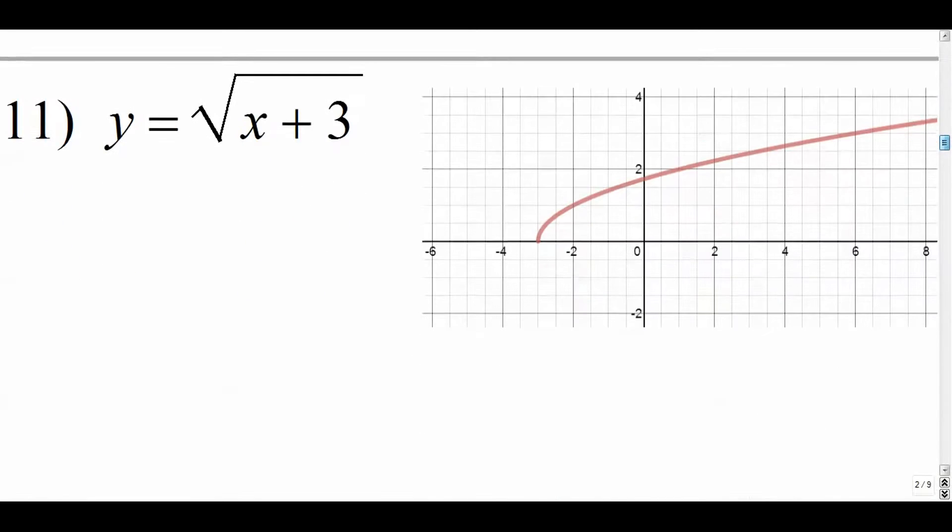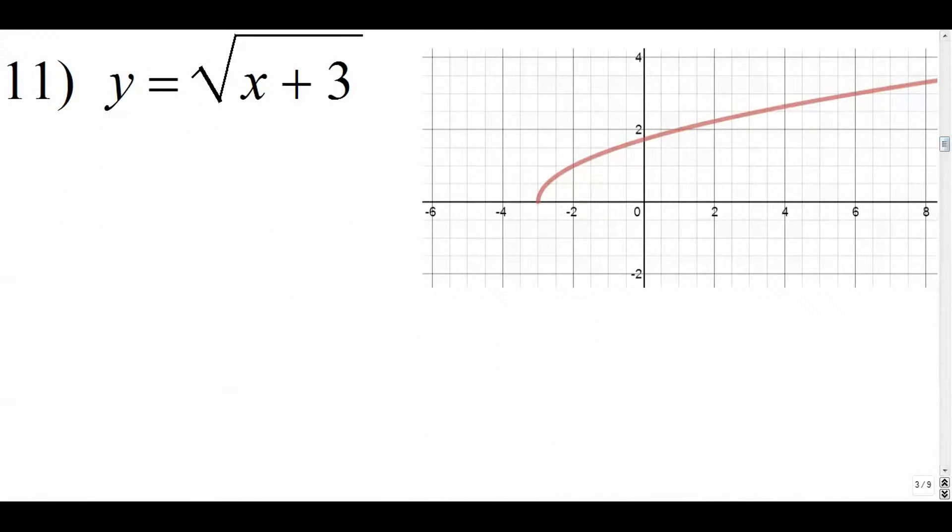Number 11. Number 11 is a square root function here. We have a radical and then a radicand x plus 3. So we can see here that I graph this and we can pick our graph up at this point, which is negative 3 comma 0.